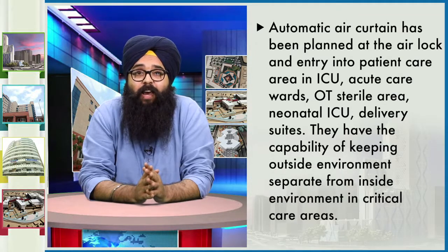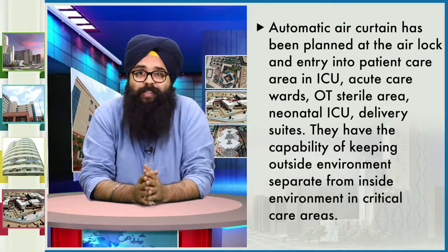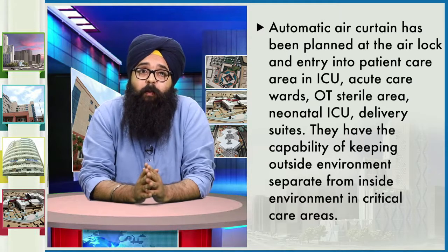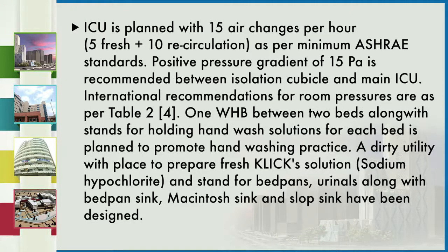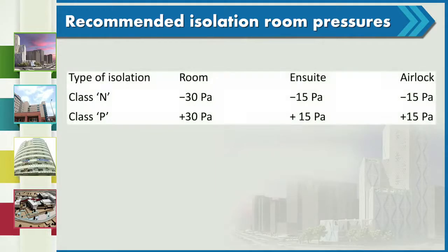Automatic air curtains have been planned at the airlock and entry into patient care areas in the ICU, as well as in acute care wards, OT sterile areas, neonatal ICUs, and delivery suites — keeping the outside environment separate from the inside in critical care areas. The ICU ventilation is planned with 15 air changes per hour — 5 fresh and 10 recirculation — as per minimum ASHRAE standards. A positive pressure gradient of 15 Pascals is recommended between the isolation cubicle and main ICU. International recommendations specify around minus 30 Pascals for Type N rooms, minus 15 Pascals inside the suite, and minus 15 Pascals at the airlock.